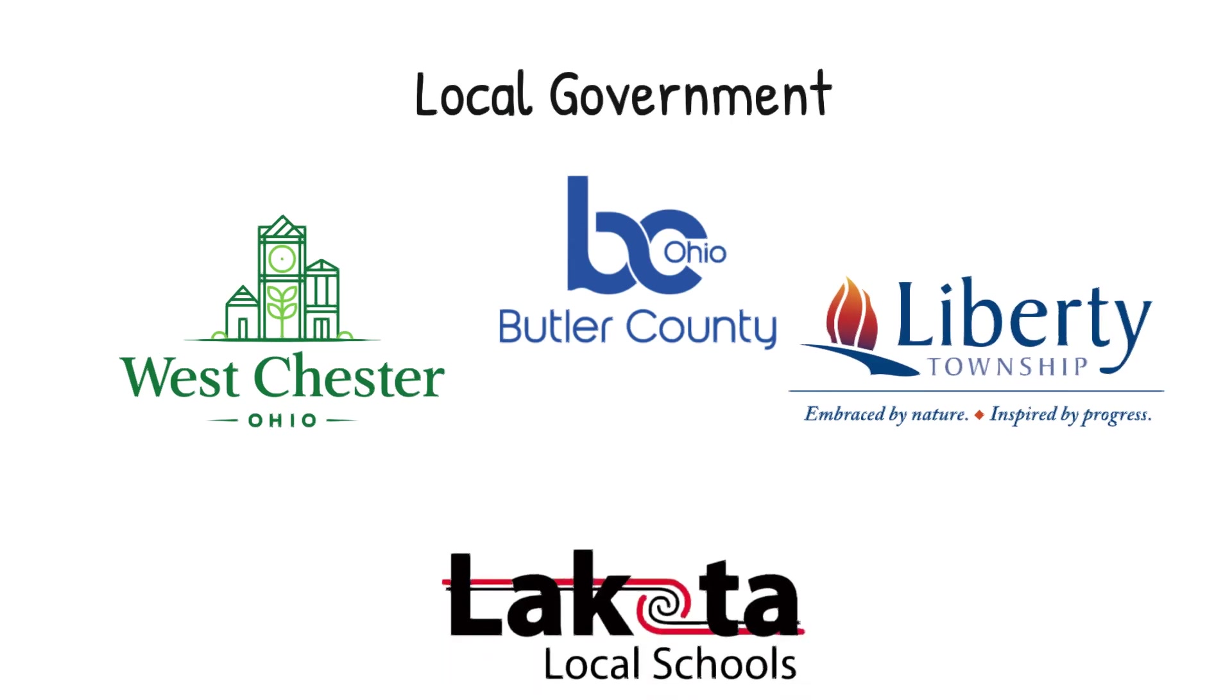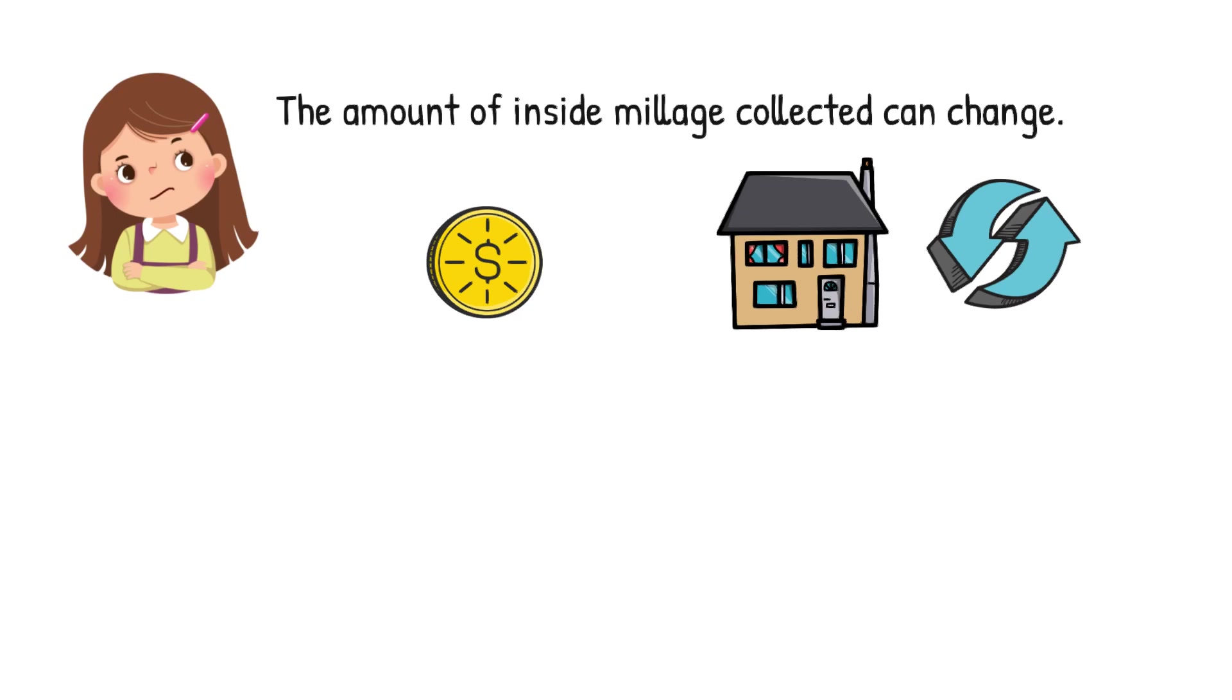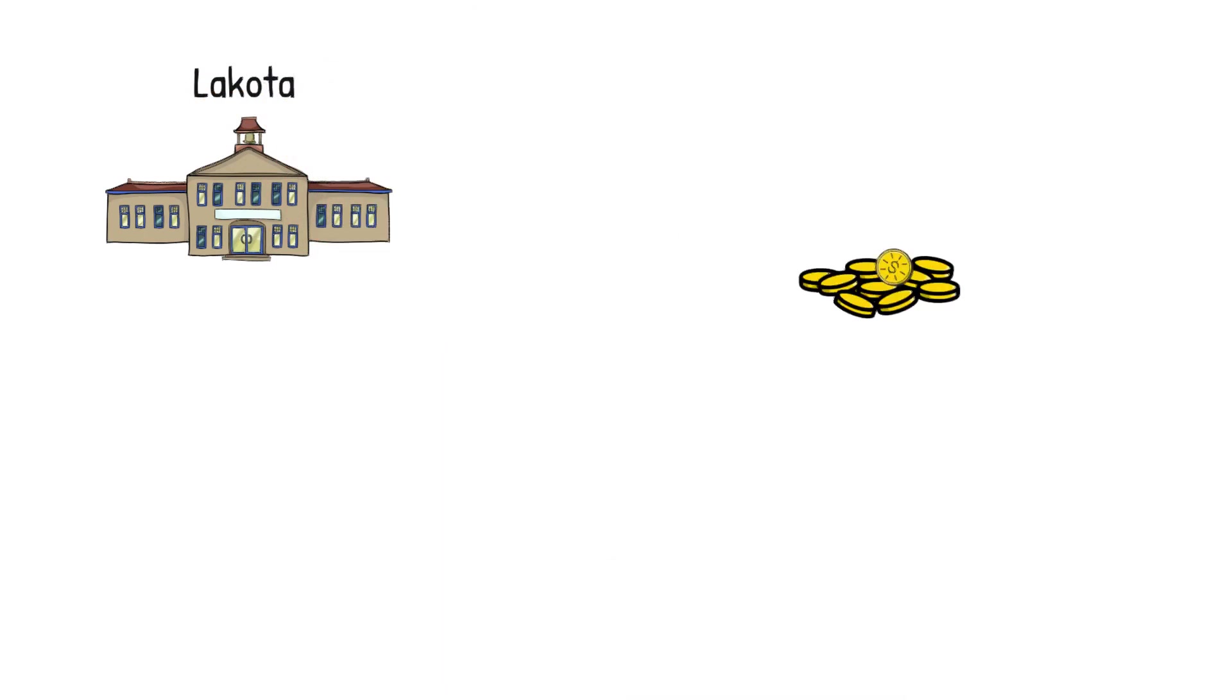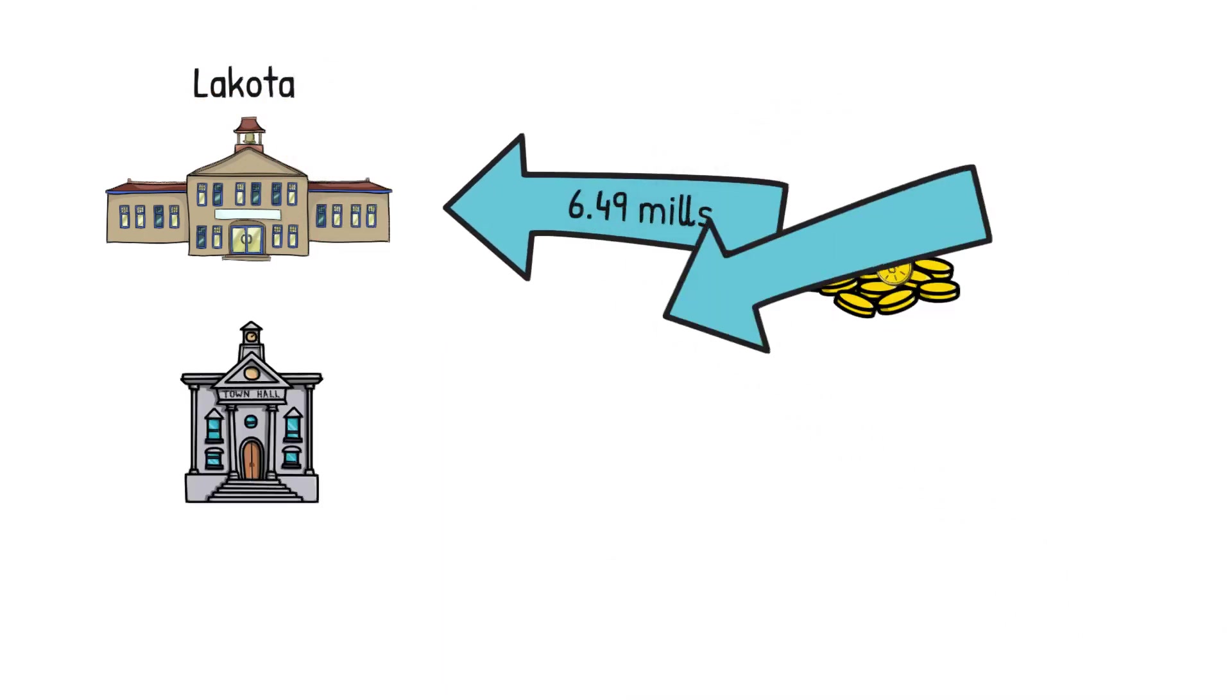That's my school. Here's the tricky part. Inside millage is the only millage that can actually collect more or less money because property values can change. And inside millage always collects 1% in Ohio. Right now, Lakota, which is my school district, gets 6.49 mills and the other 3.51 mills helps my community.